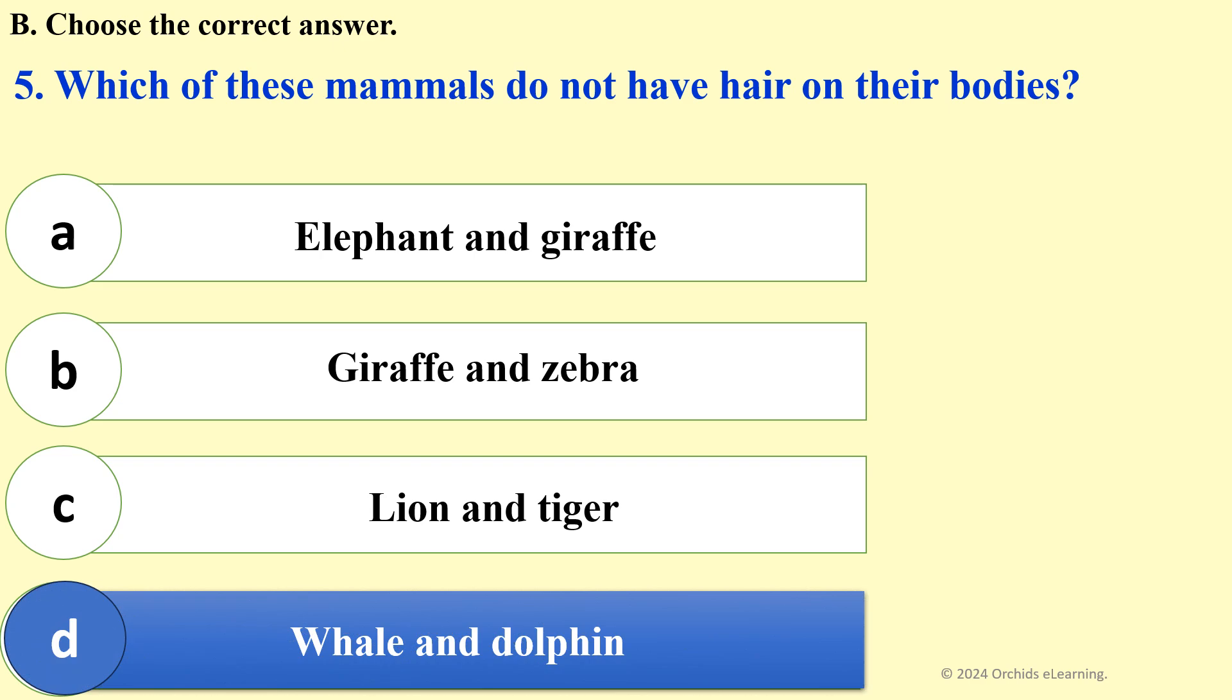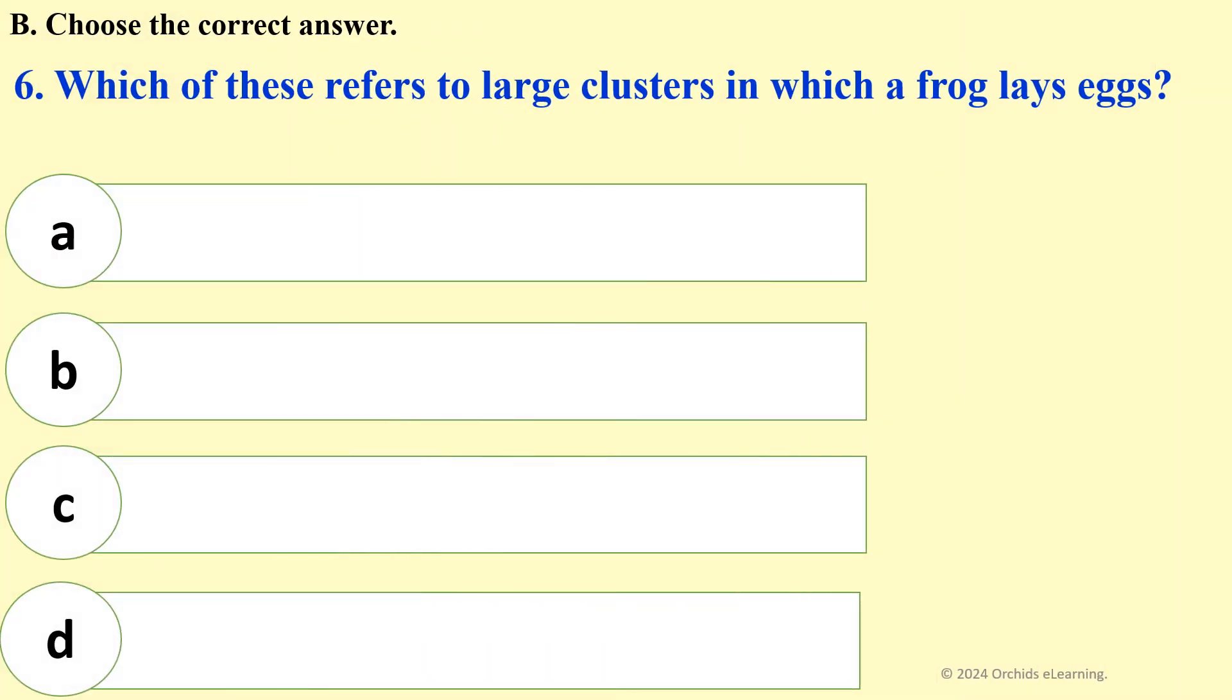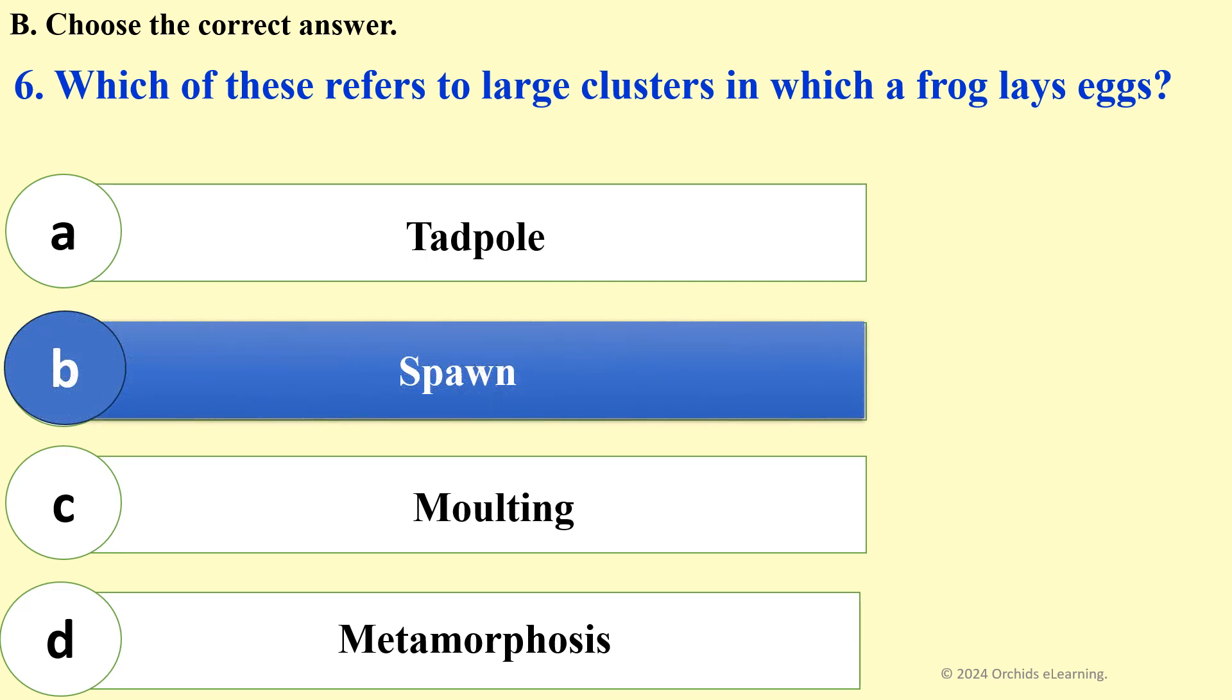Which of these mammals do not have hair on their bodies? Whale and Dolphin. Which of these refers to large clusters in which a frog lays eggs? Spawn.